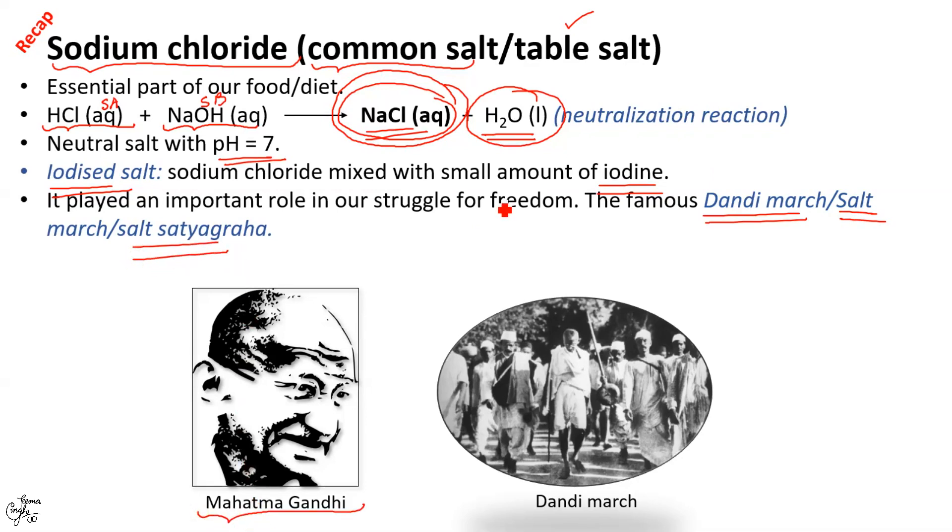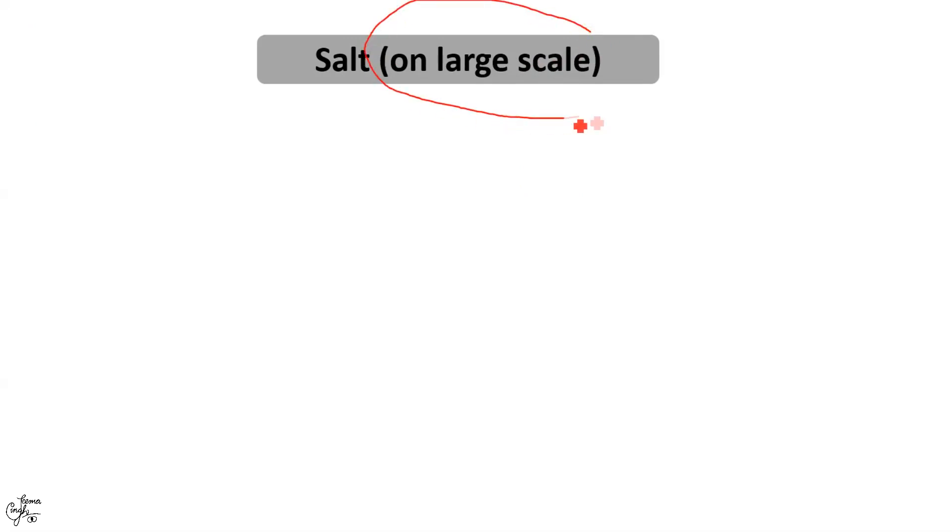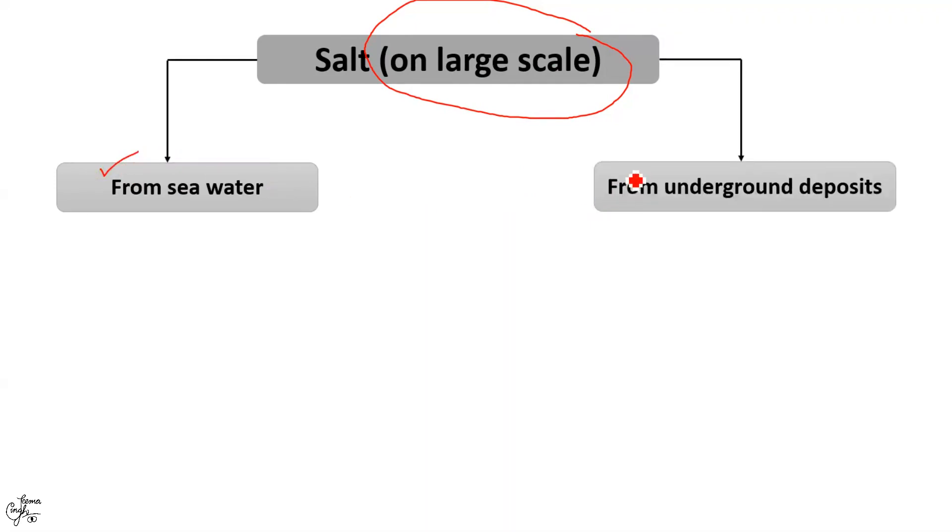For commercial purpose or on large scale NaCl can be obtained by the following two methods: number one from sea water and second from underground deposits. You must be aware that sea water is the major source of sodium chloride.